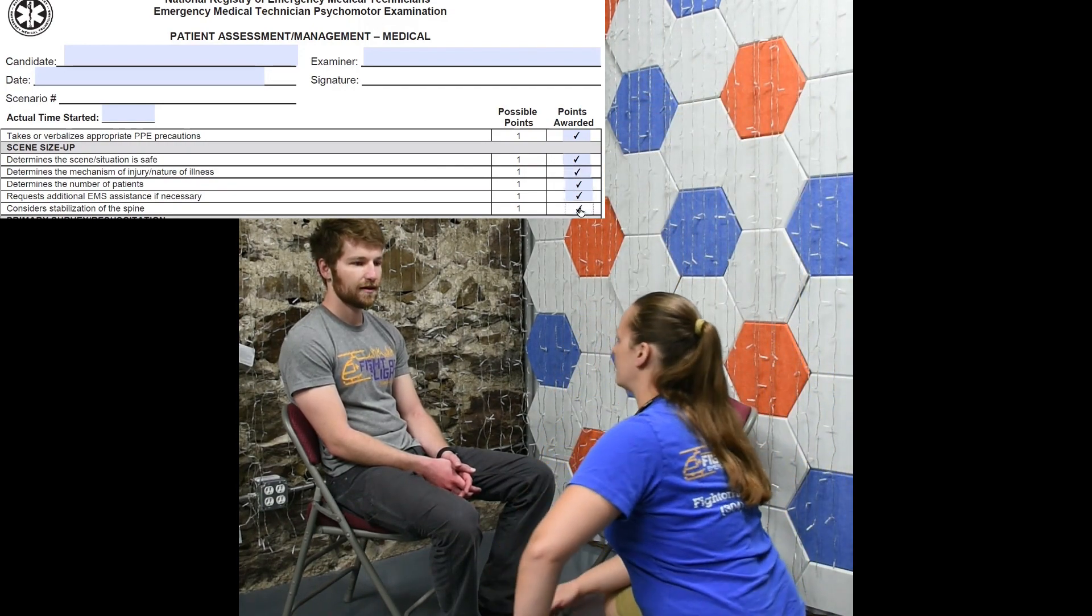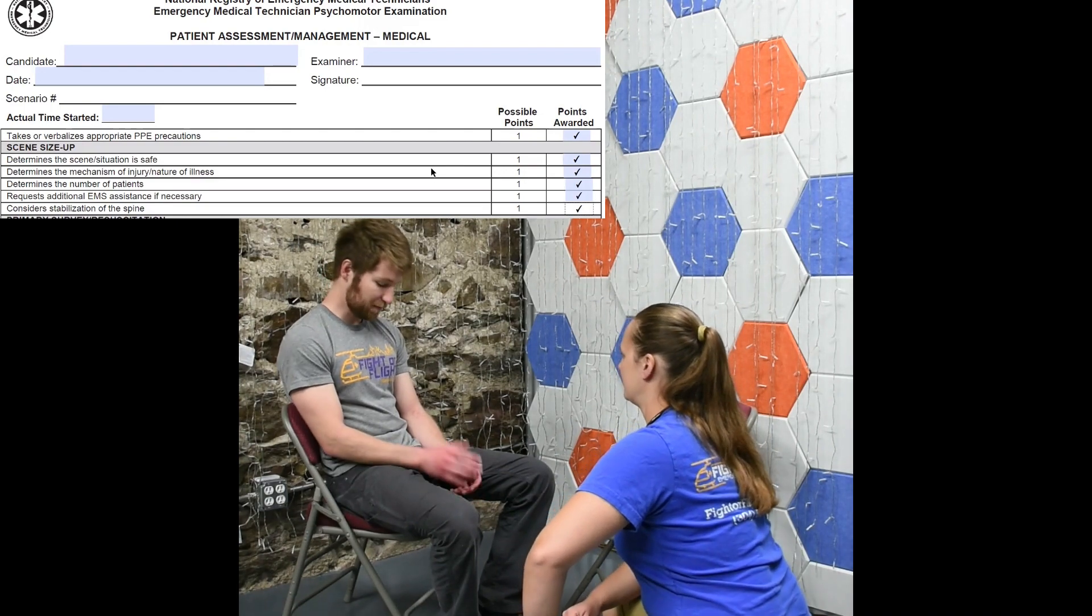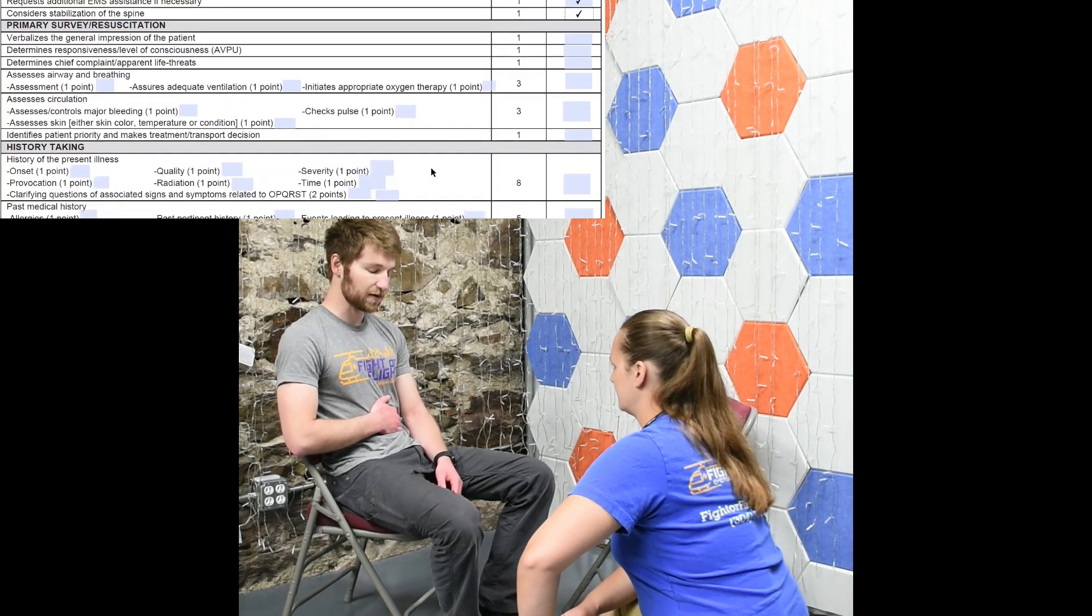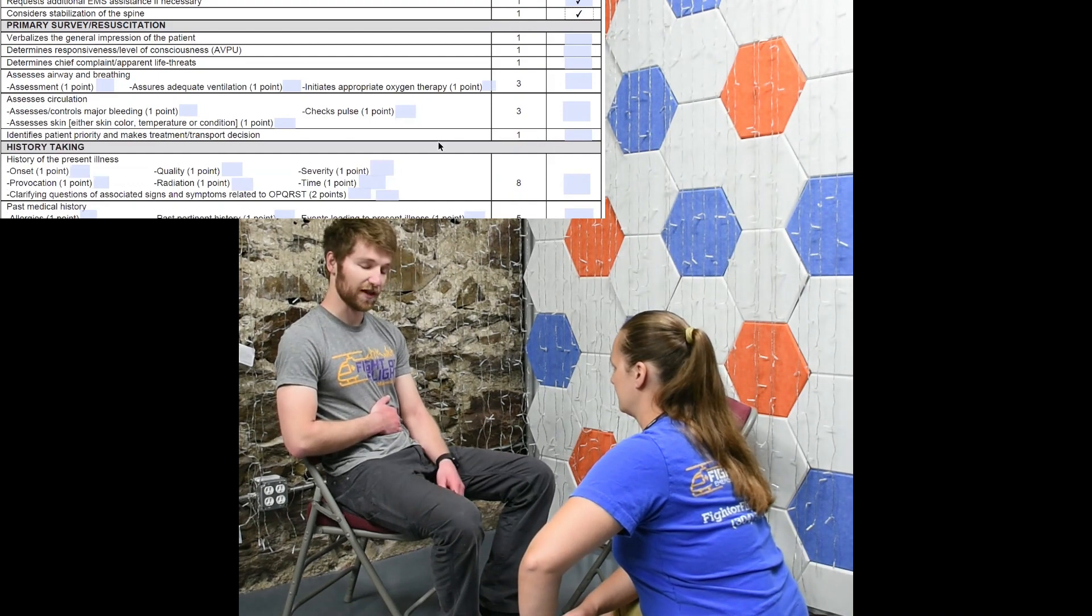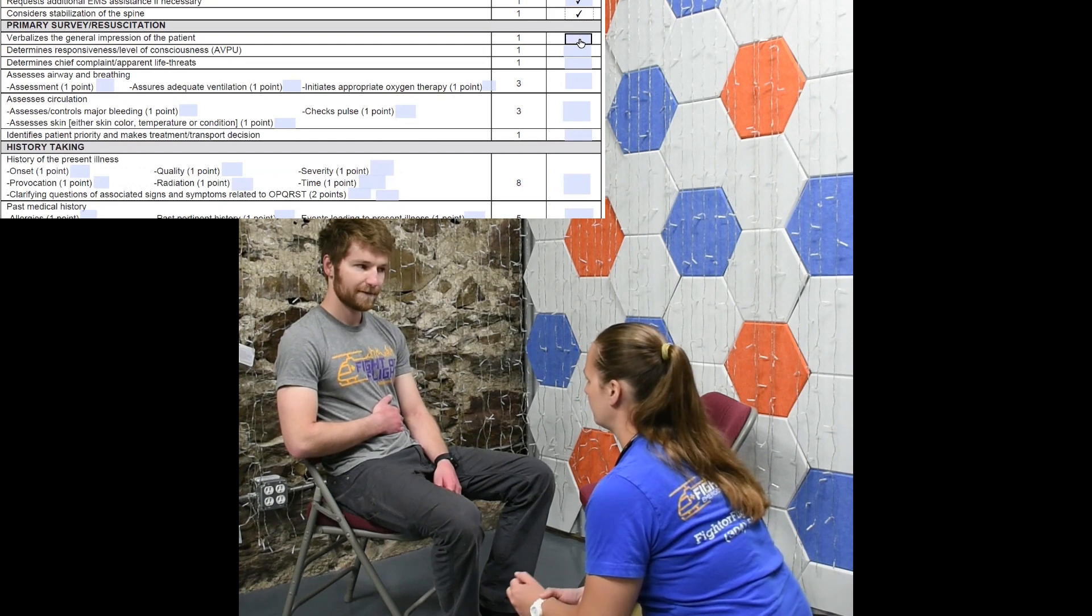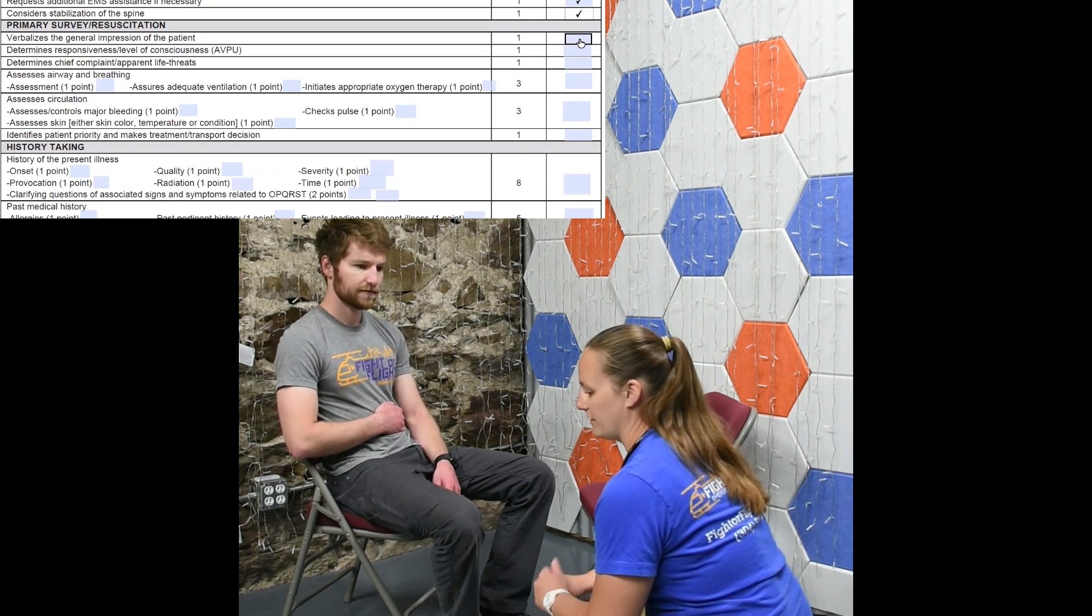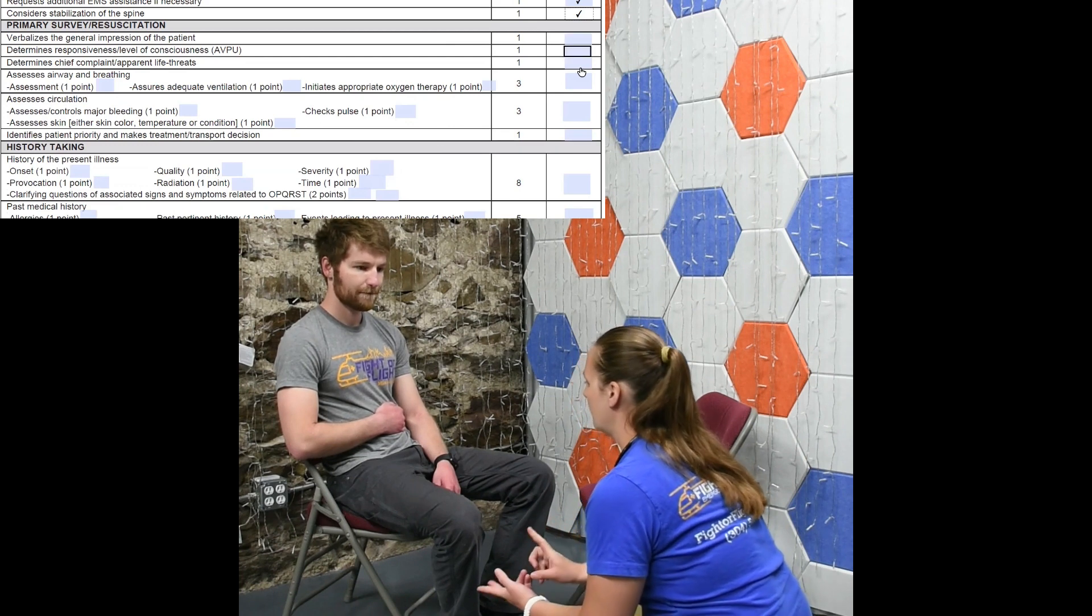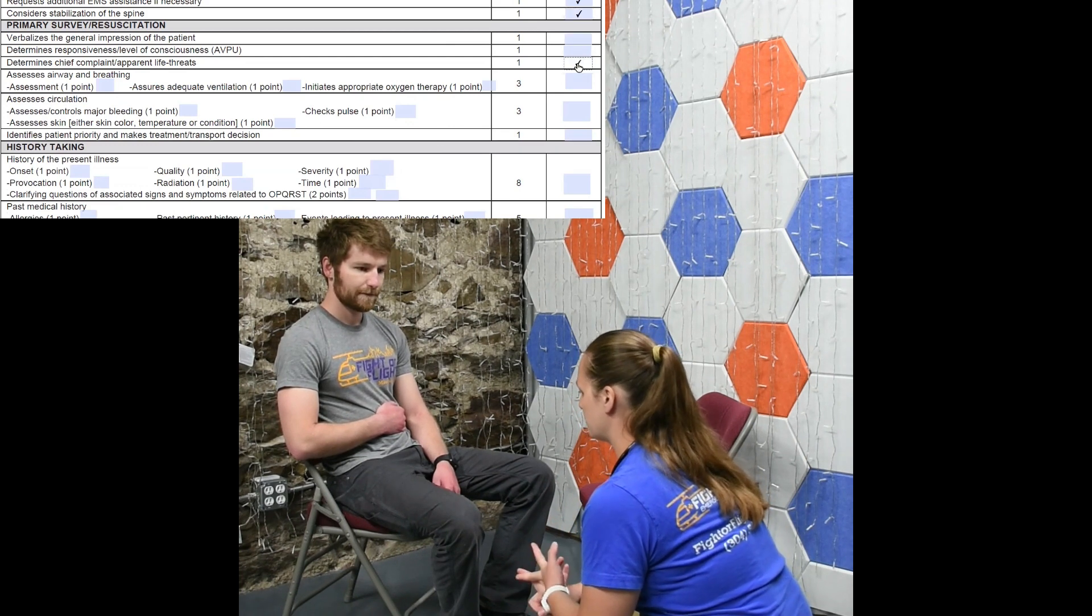Hey, I'm Danielle with the ambulance. What's the problem today? Hi, Danielle. I'm Matt, and I just have this horrible, horrible stomach pain, and I think I need to go to the hospital. Did you fall and hit your head or anything? No, not today. So, I'm going to agree that I still don't need C-spine. My chief complaint is severe abdominal pain. My general impression is poor, and you're A on the APU scale because he's talking to me.